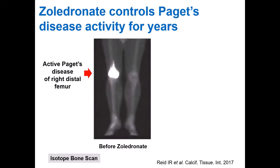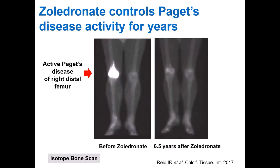We can also appreciate the effect of zoledronic acid on isotope bone scans. Here we have a patient with active Paget's disease in the distal femur, very close to the knee joint. After zoledronic acid — in fact, six and a half years after treatment — the effect of the drug is still significant, with hardly any activity seen in the distal femur. Not only is there no activity, but the disease has also not progressed, which is very important.